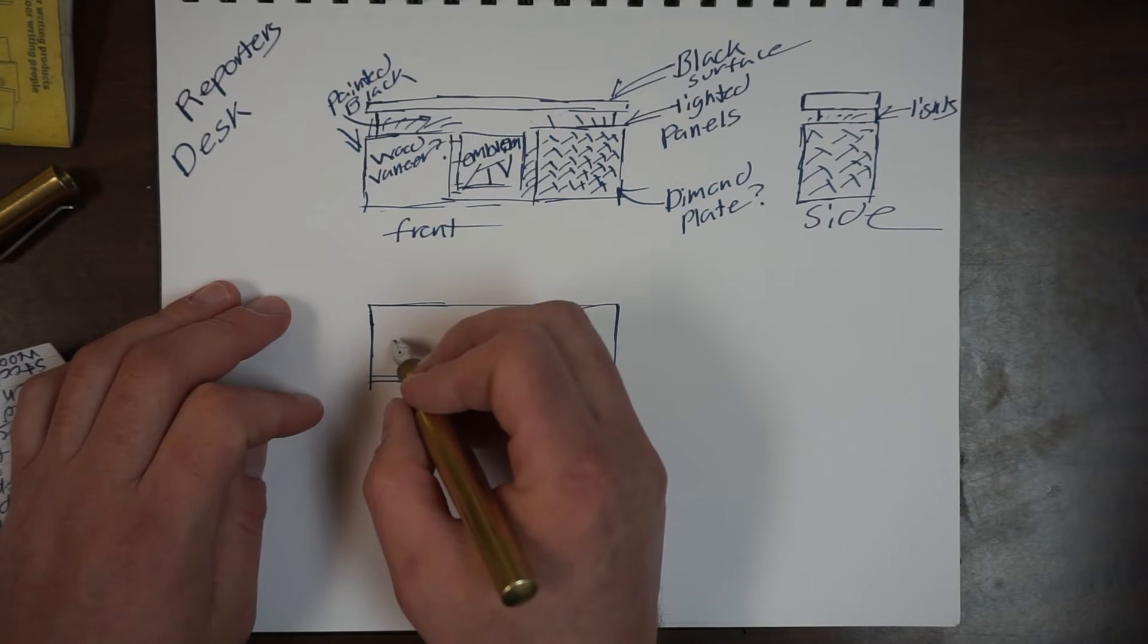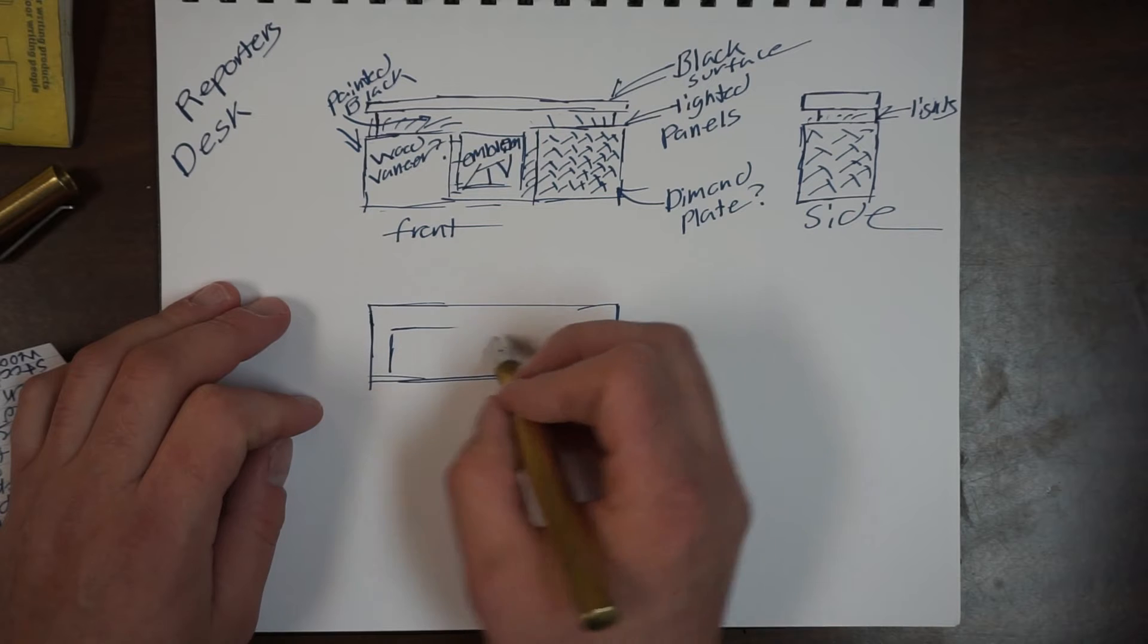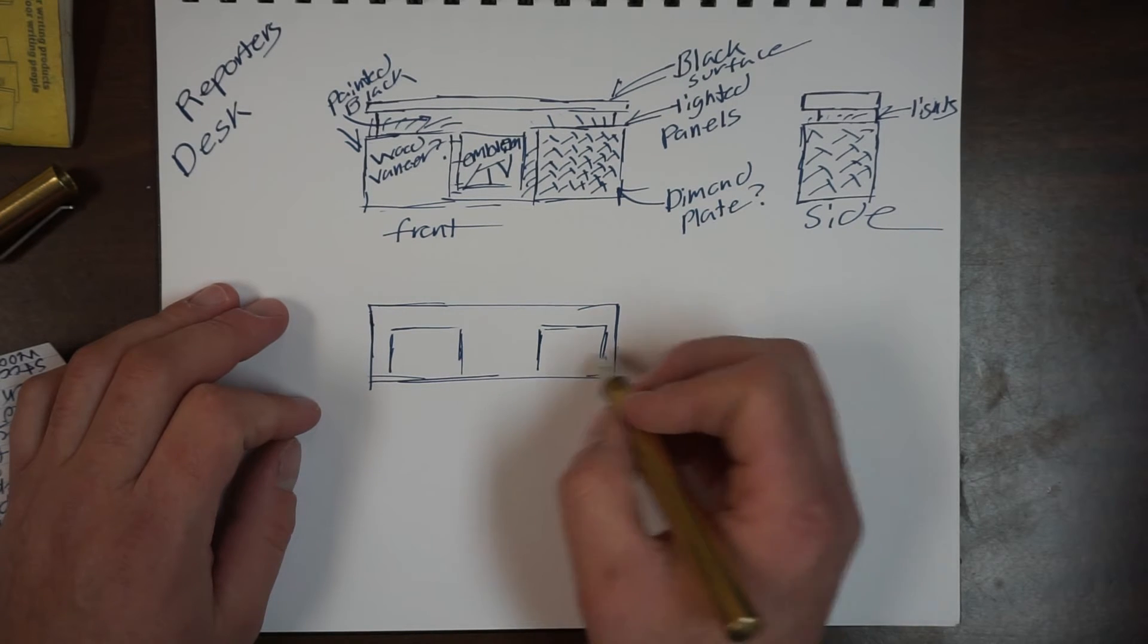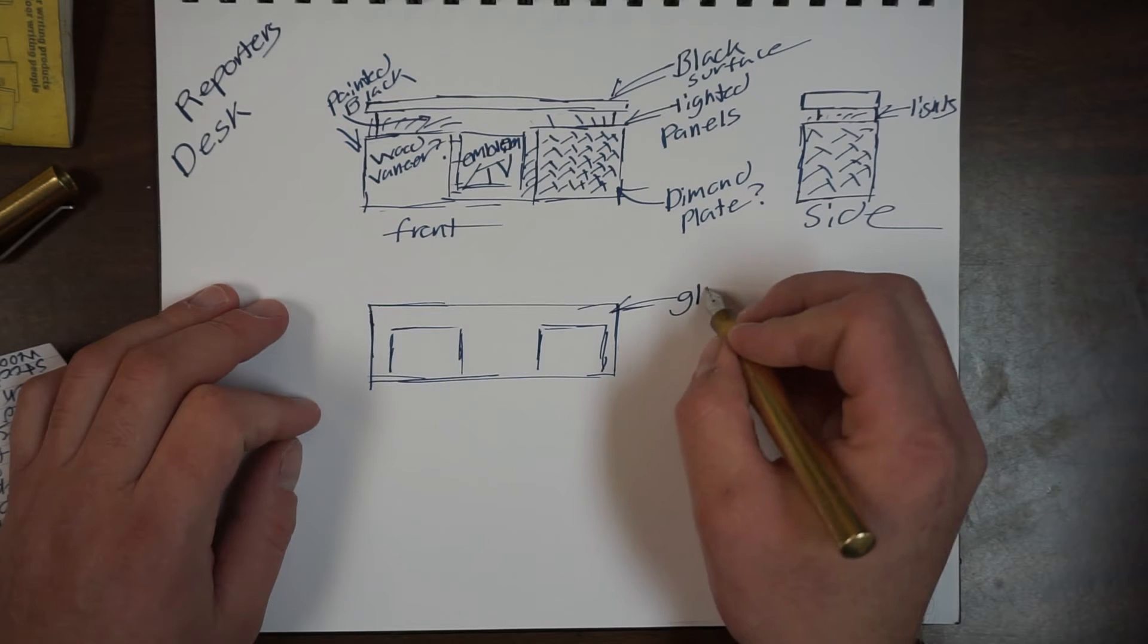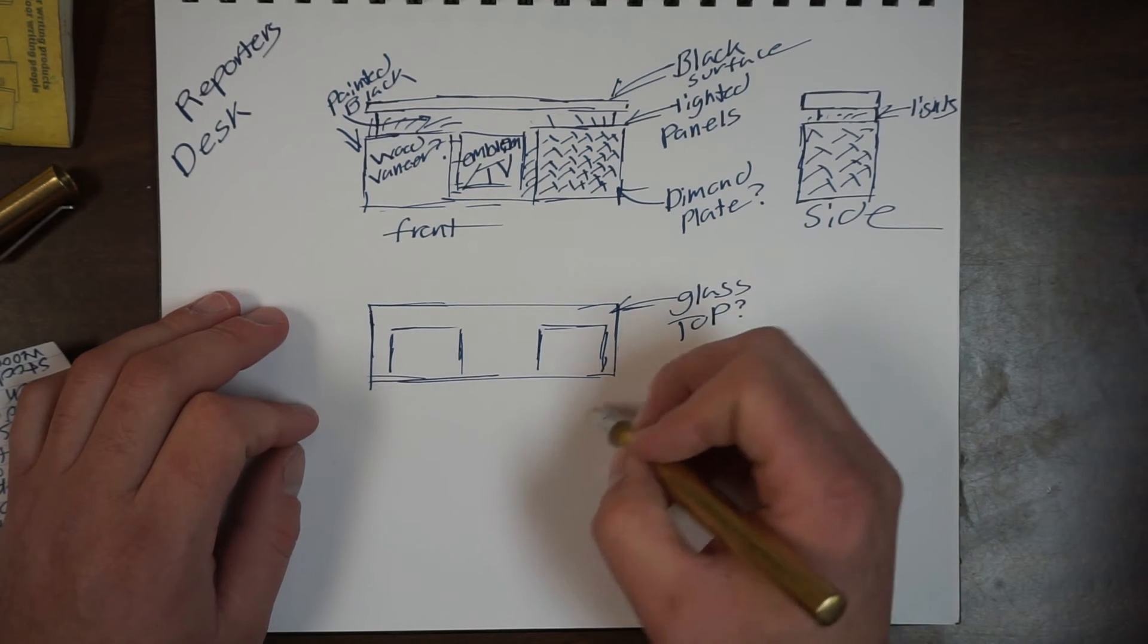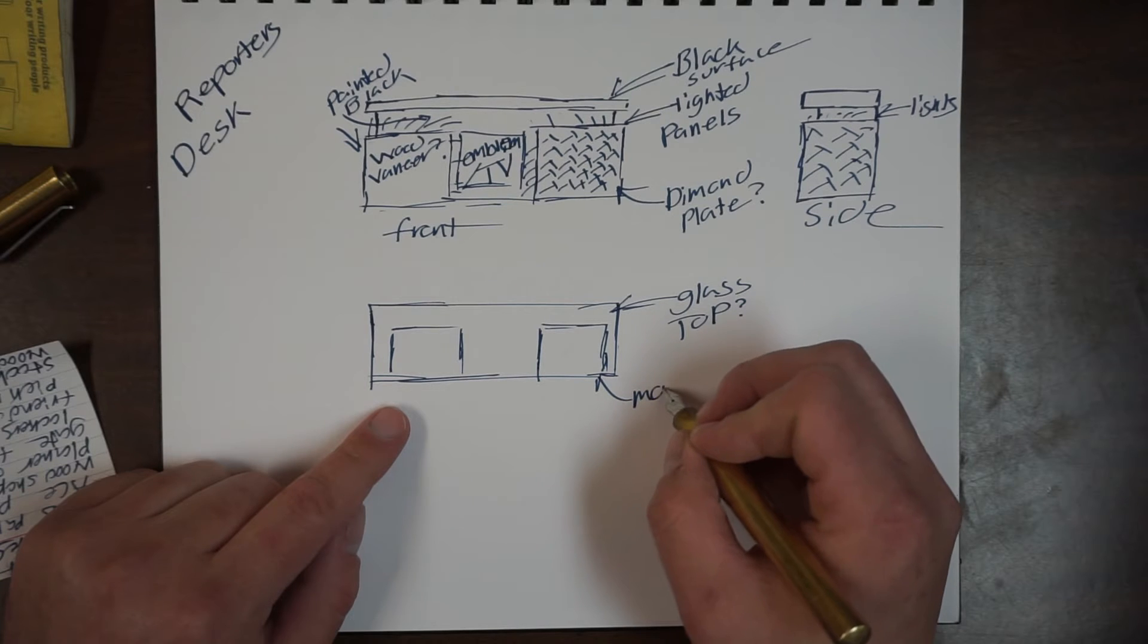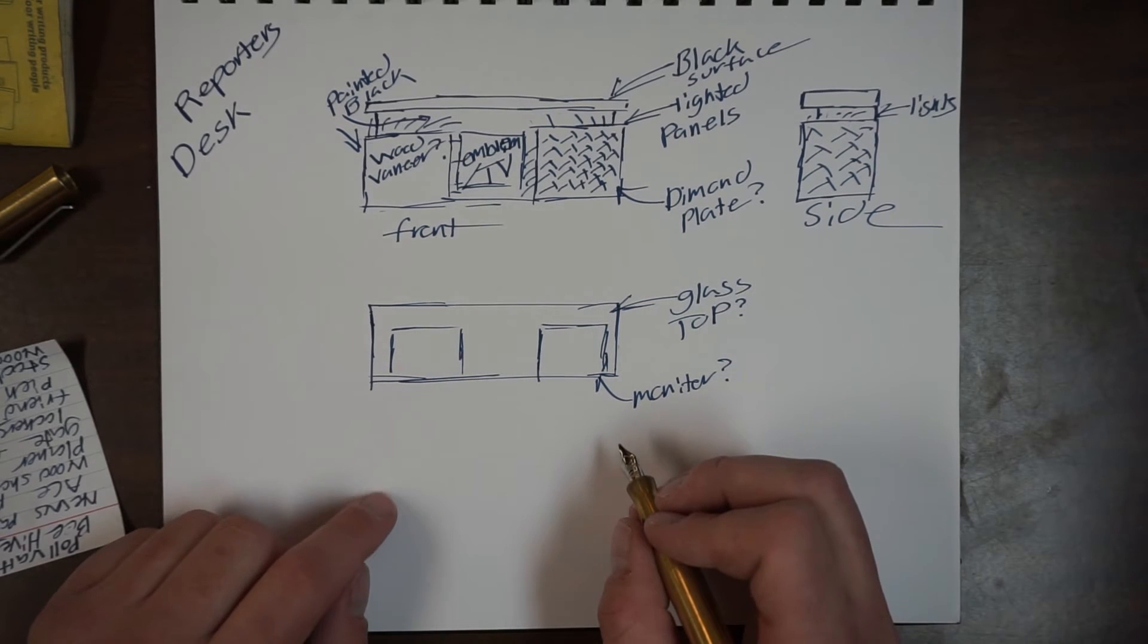Really, the only thing we could think about doing is maybe putting in space here for some monitors. We'll just hide those in the desk itself, under a sheet of glass. There's an option. So we have monitors, possibly, that way you can display information at the students.